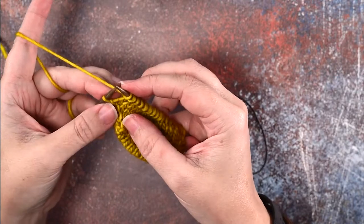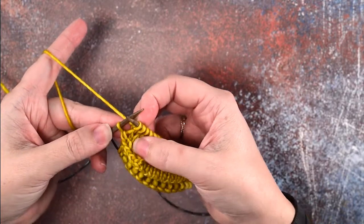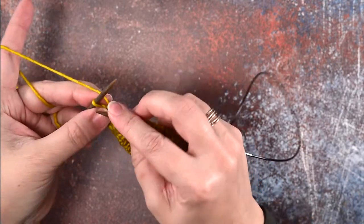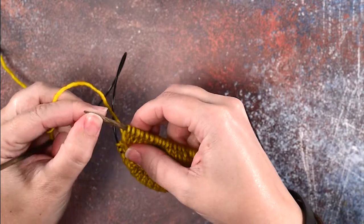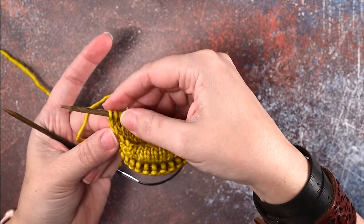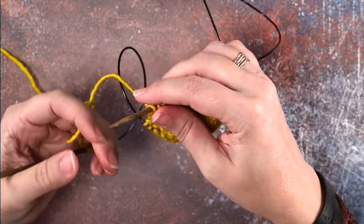Pull that stitch off the needle, and as you can see here it just created an increase to the right of this last stitch. If we knit that last stitch you can see this a little bit better. We've created that increase just to the right of that last stitch on our needle. I'll show that to you again.